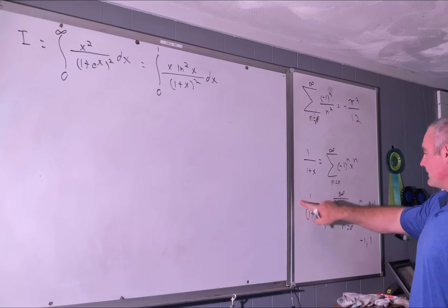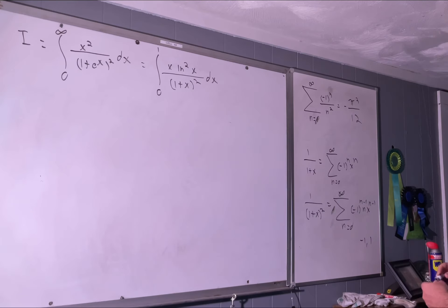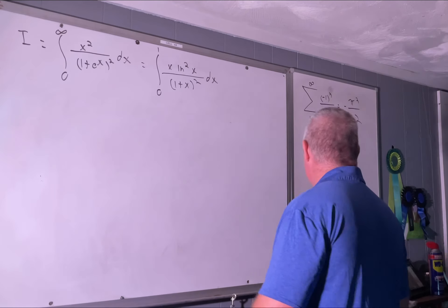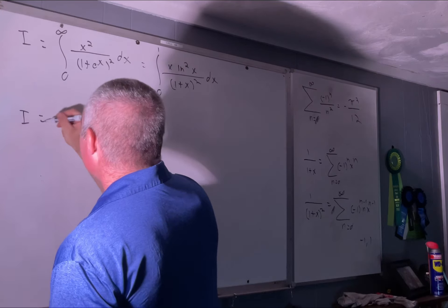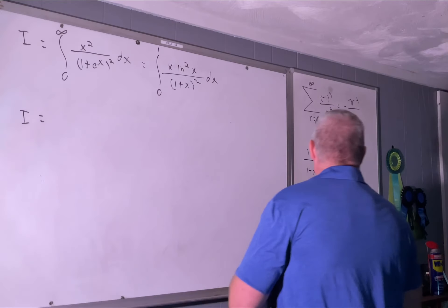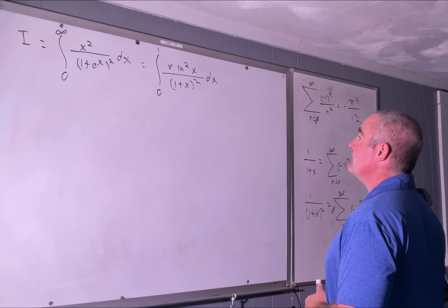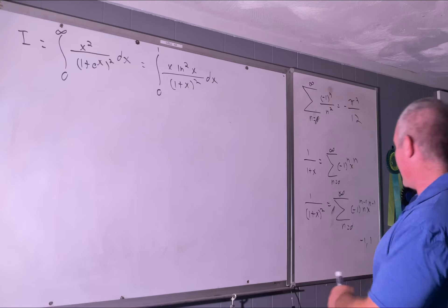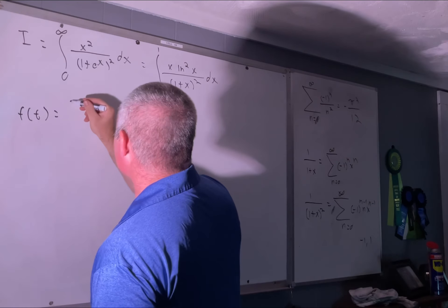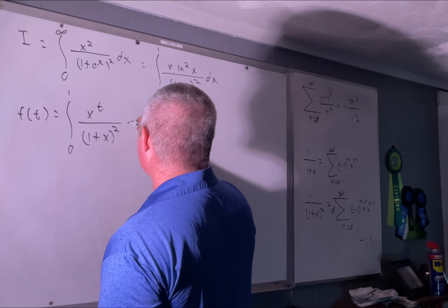Let's bring this negative sign over and introduce a negative 1 here. Now we're going to... actually no, we are not going to do that right now. Let's create this function of t. Let f(t) equal the integral from 0 to 1 of x^t over (1+x²) dx.